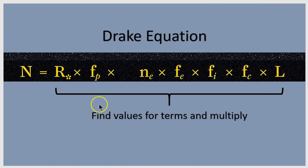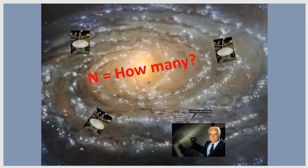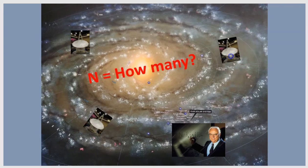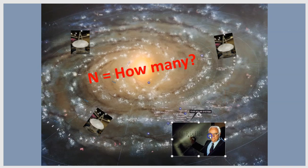So here we have the Drake Equation. He tried to figure out how would you estimate how many communicating civilizations are in our galaxy. We would have to plug in values for these terms, and when we multiply them together, we get a number that represents the number of communicating civilizations in our galaxy. Are there three? Are there 30? 300? 3,000? 3 million other intelligent civilizations with the technology to communicate with us? N is that number.